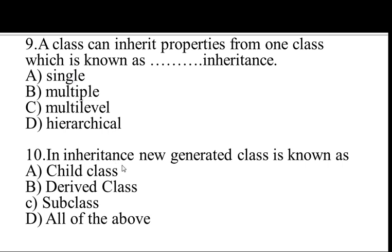Next, in inheritance the new generated class is known as — options are: A. Child class, B. Derived class, C. Subclass, D. All of the above. The new generated class is also known as child class, derived class, or subclass. So the answer is D, all of the above. Thank you.